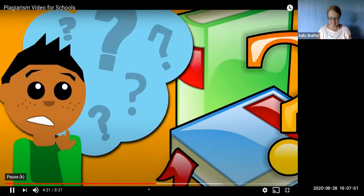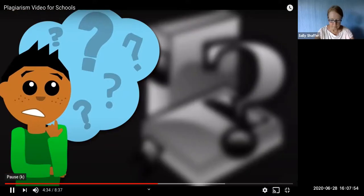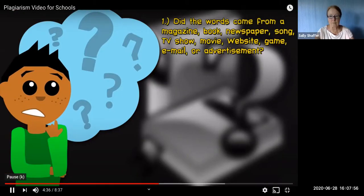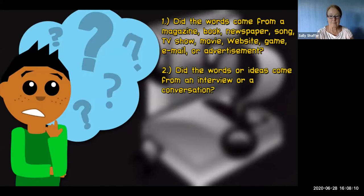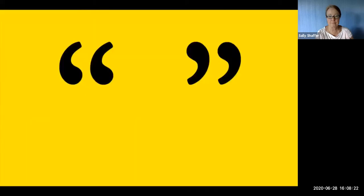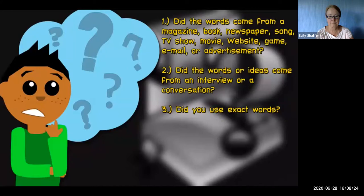There are four easy areas to figure this out. Number one, if the words or the ideas that you're using came from a magazine, a book, a newspaper, a song, a TV show, a movie, a website, a game, an email, or an advertisement, you need to give credit. If the information that you're using came from an interview or a conversation, believe it or not, you need to give credit for it. Third, if you use exact words, if you write verbatim, meaning word for word, you need to use quotation marks. You also need to tell the teacher where it came from.